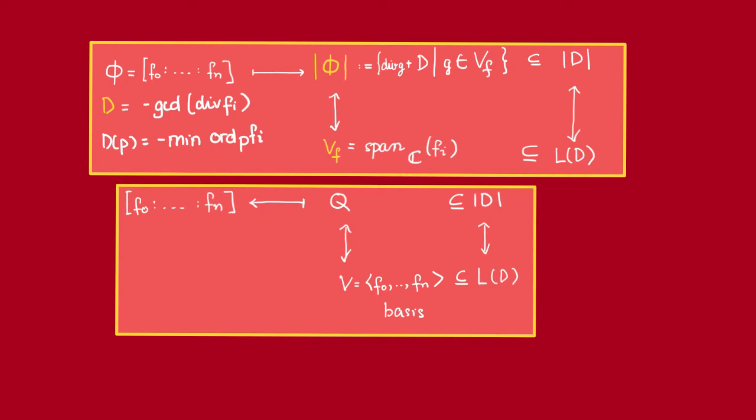If we denote the collection of divisors associated to the map phi by this, then it turns out that this collection is a linear system lying inside the complete linear system associated to the divisor D defined by this. So if phi is given by this tuple, then we define the divisor D to be the minus of the gcd of these divisors. That means that at every point p, D(p) is just minus the minimum of the order of vanishing of f_i at p.